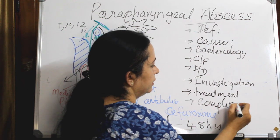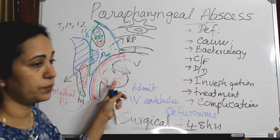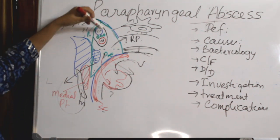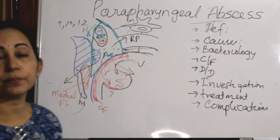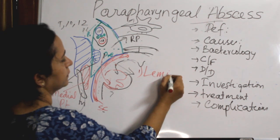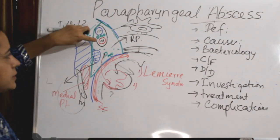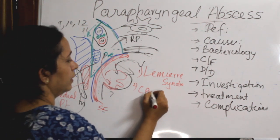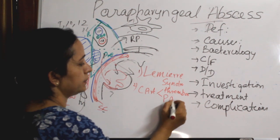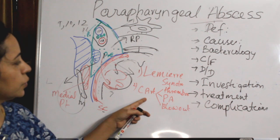Complications arise from failure to diagnose and treat promptly. Using the anatomy as a guide: involvement of the internal jugular vein in the carotid sheath can lead to thrombosis of the internal jugular vein, known as Lemierre's syndrome. The carotid artery can develop thrombosis, pseudoaneurysm, or a carotid blowout — the latter being a potentially fatal emergency.